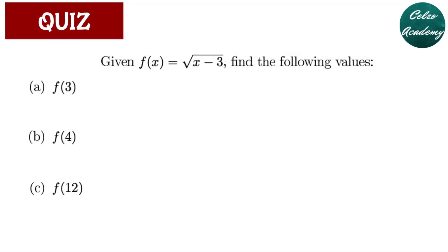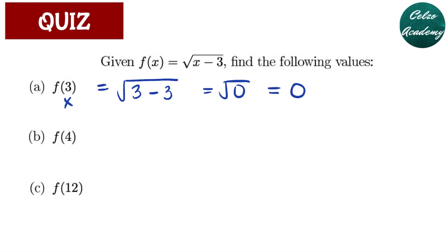Given f of x is equal to the square root of x minus 3, find the following values. Let's begin with f of 3 — our x value is 3, so substituting, we have the square root of 3 minus 3, which is the square root of 0, or simply 0. For question B, f of 4 — our x value is 4, so we have the square root of 4 minus 3, which is the square root of 1, and the square root of 1 is 1.